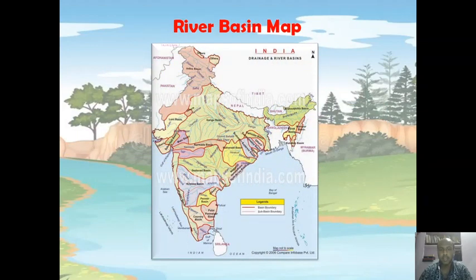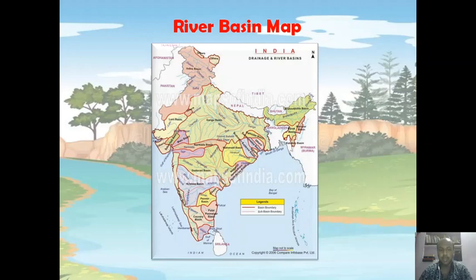You can understand this concept better if you go through this river basin map of India. Here you will find that in comparison to major North Indian rivers like Ganga and Indus, there are many rivers in the Peninsular plateau of South India that have very small basins — like Narmada, Tapi, Krishna, Kaveri, etc. This diagram helps us understand that the basin area and catchment area of North Indian rivers are larger than those of South Indian or Peninsular rivers.